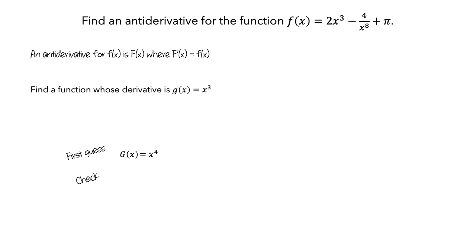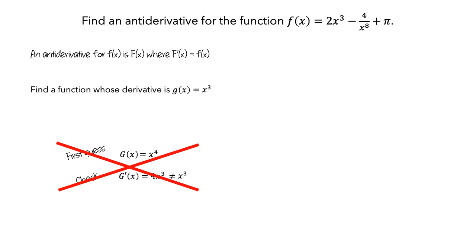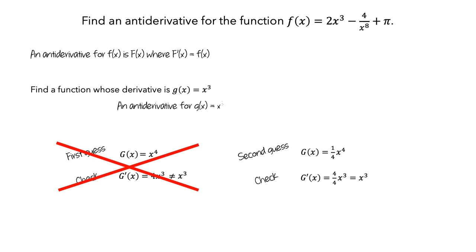Next, we'll check to see if our guess is correct. We'll compute the derivative of x to the fourth using the power rule. We get 4x cubed, and we want to compare this to little g — and they're not equal. So this first guess at an antiderivative is not correct, but it was close; it was just off by the coefficient of 4. Let's make another guess. This time, let's try one-fourth of x to the fourth. The derivative of this new capital G is equal to x cubed, which is our little g. So an antiderivative for little g of x is one-fourth x to the fourth, because the derivative of capital G is little g.